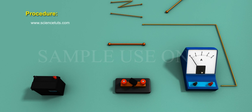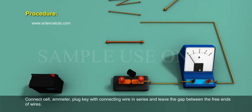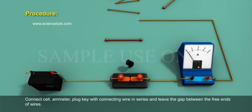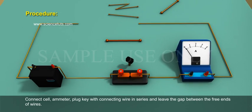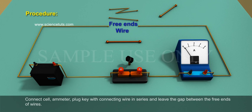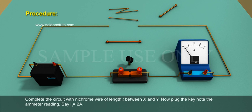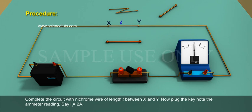Procedure: Connect cell, ammeter, plug key with connecting wire in series and leave the gap between the free ends of wires. Complete the circuit with nichrome wire of length L between X and Y. Now plug the key. Note the ammeter reading.